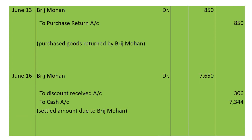June 13: returned goods to Bridge Mohan of list price 1,000. We calculate 15% of 1,000, which is 150; 1,000 minus 150 equals 850. Entry is made with rupees 850: Bridge Mohan account debited to Purchase Return 850. Narration: purchased goods returned to Bridge Mohan.